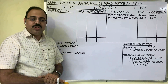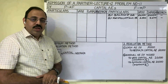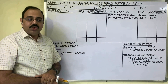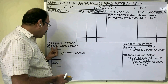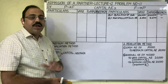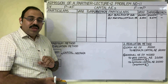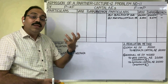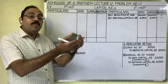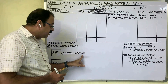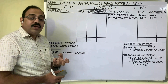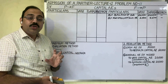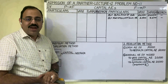When goodwill is adjusted under revaluation method, we transfer the goodwill amount to old partners capital accounts in the old profit and loss ratio. Even though a new ratio is given, we should not calculate any sacrificing ratio. Goodwill is an intangible asset. Even though it exists, old partners were not showing it in the balance sheet. At the time of admission, as the new partner is unable to bring goodwill, old partners create it artificially and transfer it to their capital accounts in the old profit and loss ratio.